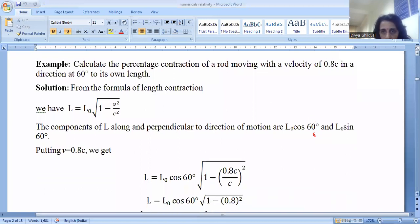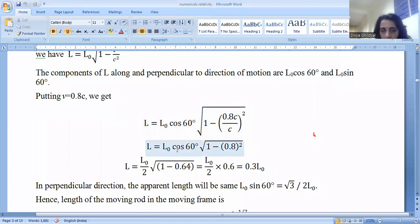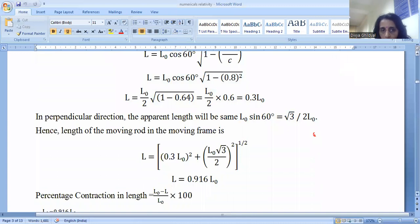Now we have been given that velocity is 0.8c. That means I put v here as 0.8c. I put L cos theta for my proper length, and 0.8c upon c square—the c square gets cancelled. I get L_0 cos 60 degree under root 1 minus 0.8 square. Solving it numerically, I get 0.3 L_0. In perpendicular direction, the apparent length will be L_0 sin 60 degree. Sin 60 degree is root 3 by 2. So I get in perpendicular direction root 3 by 2 L_0.